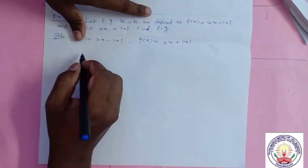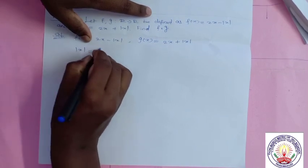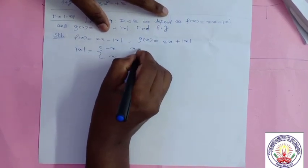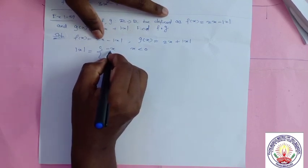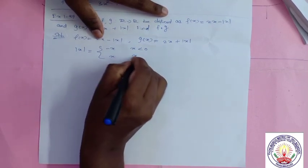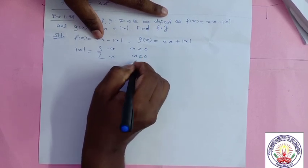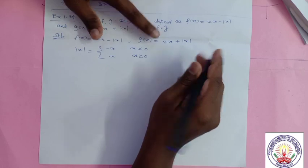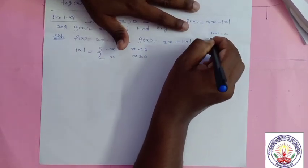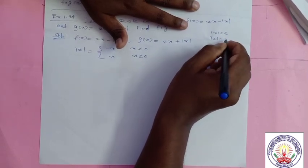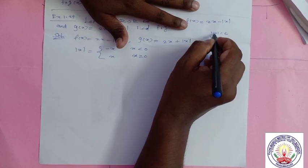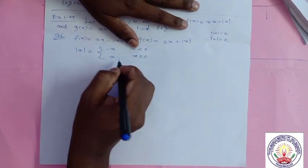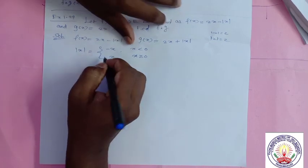We must know what the modulus function is. Modulus of x equals: minus x when x < 0, and x when x ≥ 0. For example, |2| = 2 and |-2| = 2. When x is positive, write x. When x is negative, multiply by minus 1. This is the modulus function.